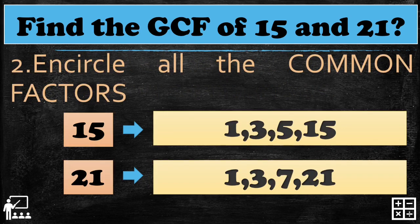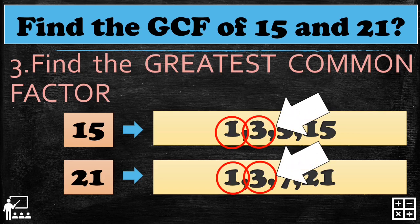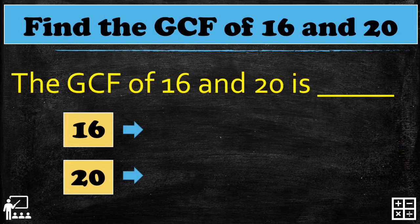The common factors of 15 and 21 are 1 and 3. Finding the greatest common factor: the GCF of 15 and 21 is 3. Now it's your turn. Find the GCF of 16 and 20.